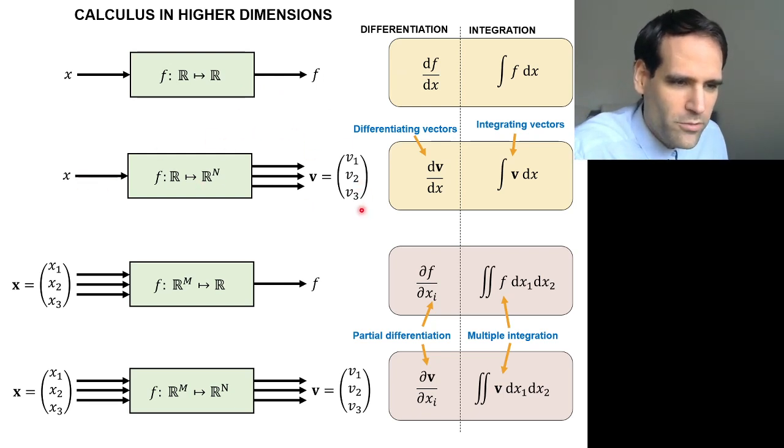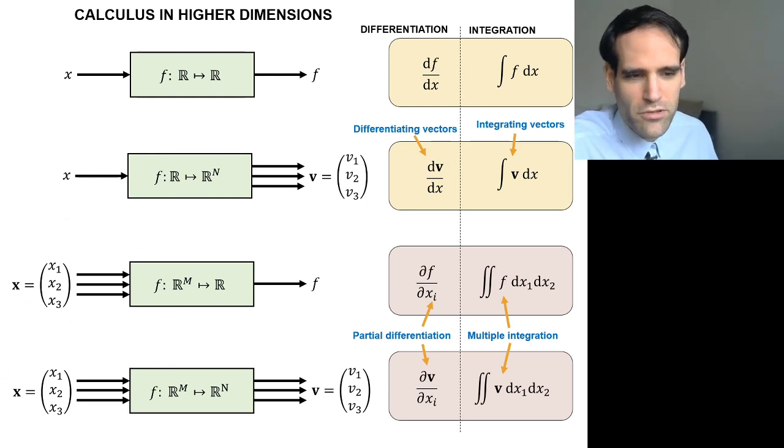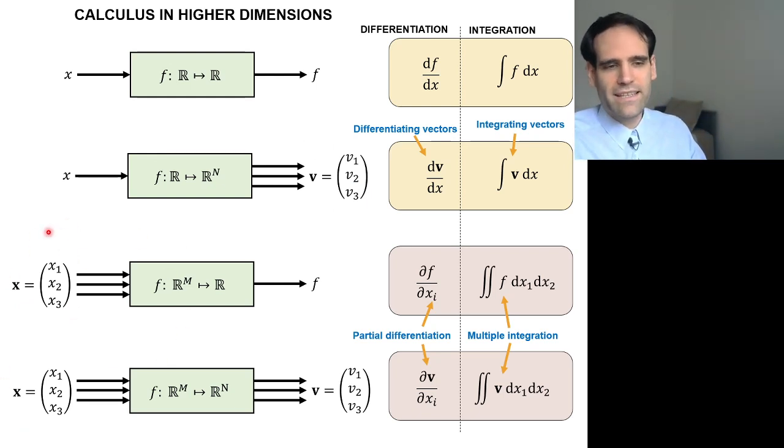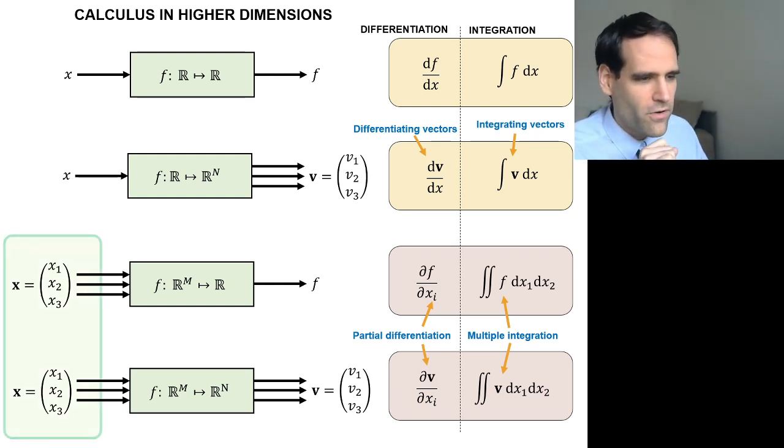So multiple outputs, but also multiple inputs. In practice, when we have multiple inputs, the most typical case is that the input is simply the position vector. So that's what we are going to focus on in this chapter 3.1.